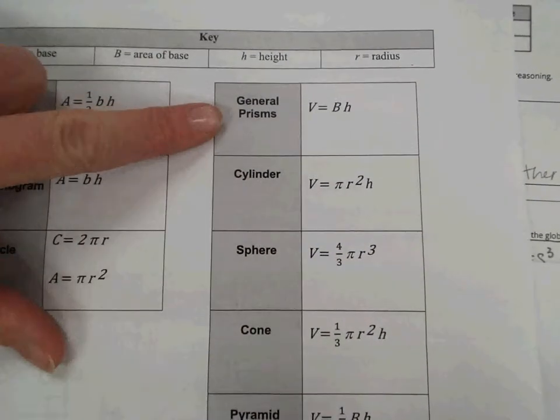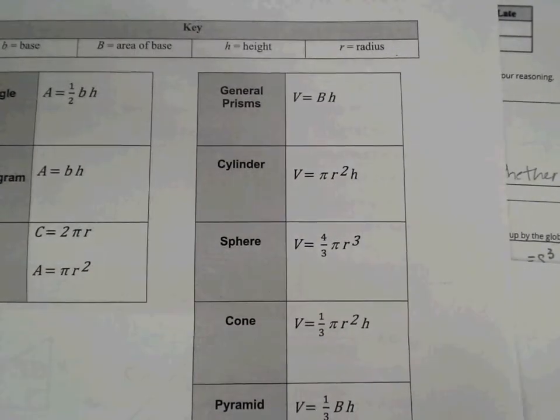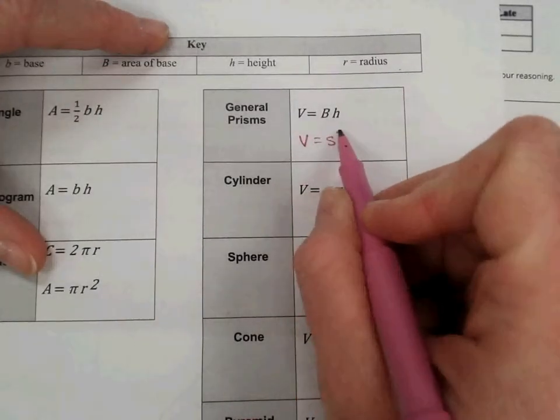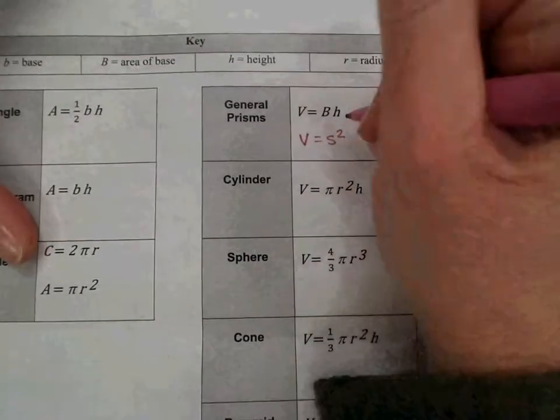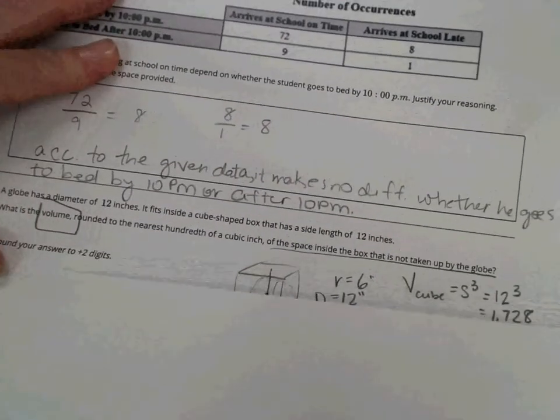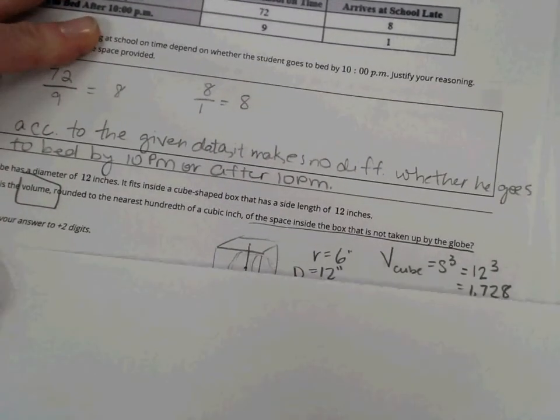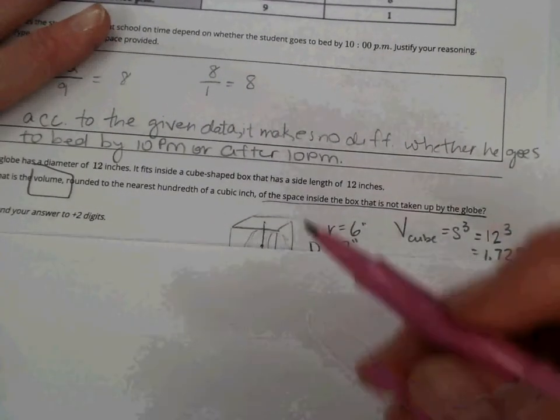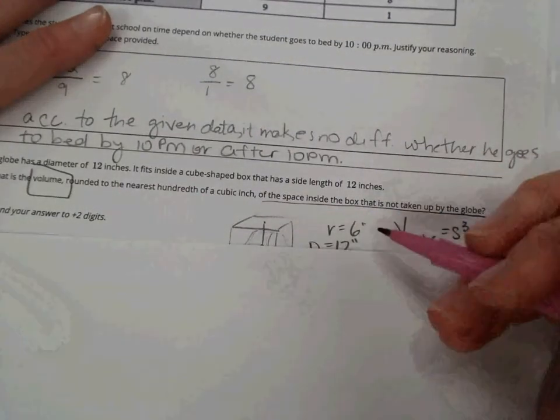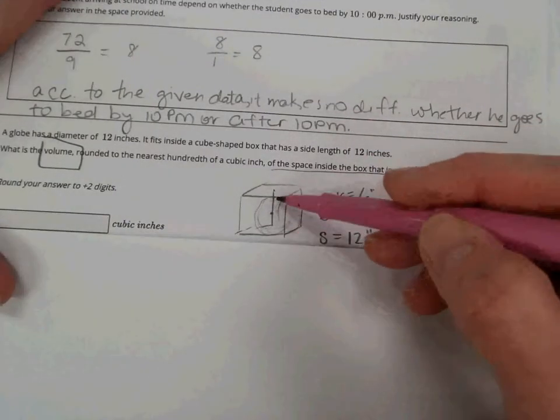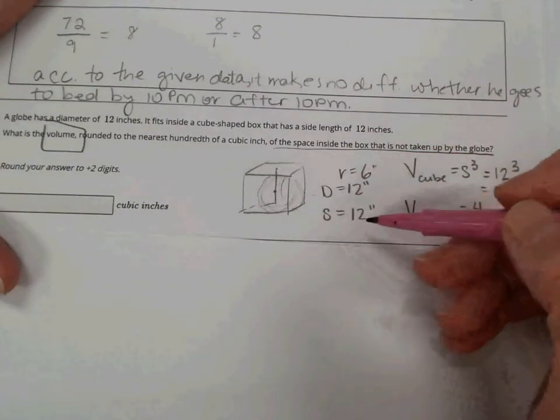We also have general prisms. V equals capital B times H, which means the area of the base times the height. For a cube, the volume is side cubed. Since the base is a squared, that would be side squared times side again. So, you see, I started by, I drew a little picture first, and then, based on the information, the diameter of my sphere is 12, but my formula deals with a radius, so I took half of the diameter, get the radius. The diameter of the sphere would be equal to the length of a side of the cube.